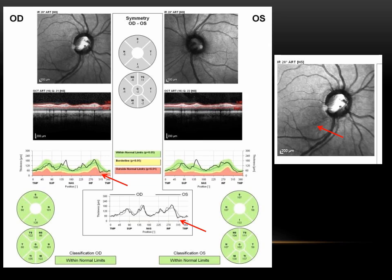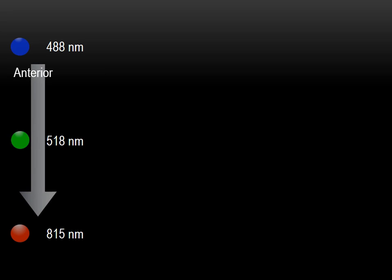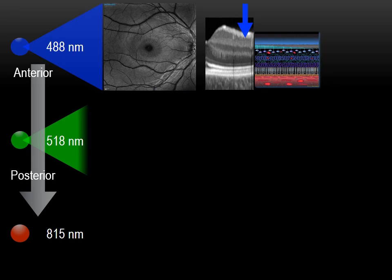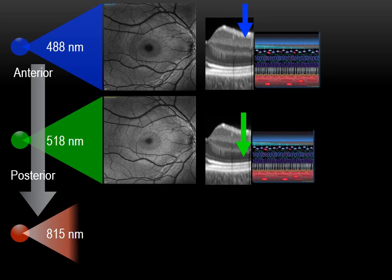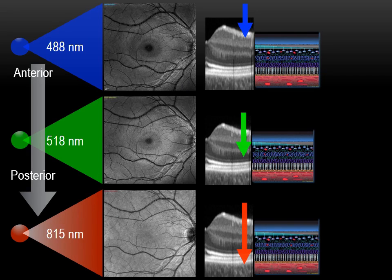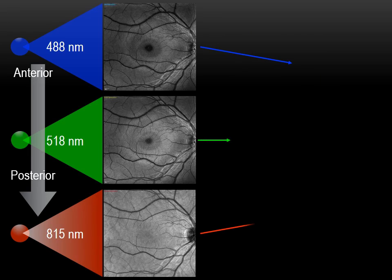Multicolor imaging can enhance the picture that we get, not only to help us confirm, but also to demonstrate it to our patients. Multicolor is the combination of three different laser wavelengths: the blue, the green, and the red. The direction of imaging goes from anterior to posterior, or inner retinal layers to outer retinal layers. The blue light images the inner retinal layers, the green light the inner to middle retinal layers, and the red light the outer retinal layers.